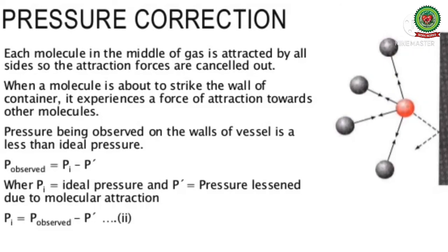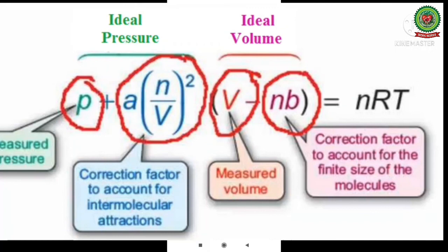P prime is the pressure correction. The attractive force exerted on a single molecule about to strike the wall is proportional to the number of molecules per unit volume in the bulk of the gas and the number of molecules striking the wall. So pressure correction P prime equals A upon V square, where A is a constant depending upon the nature of the gas and V is the volume of one mole of the gas.